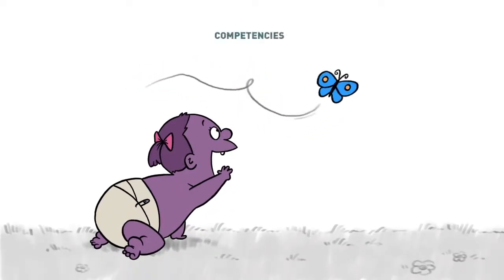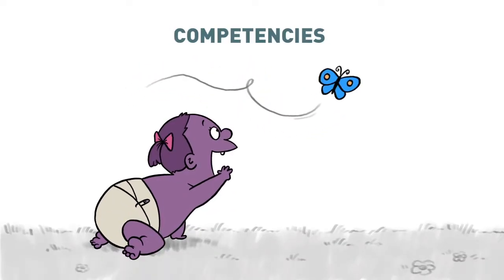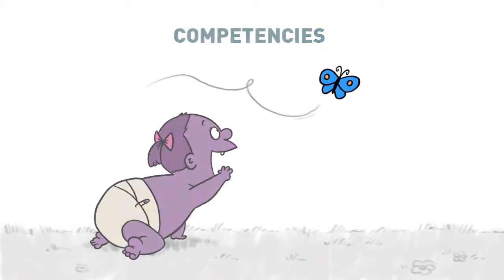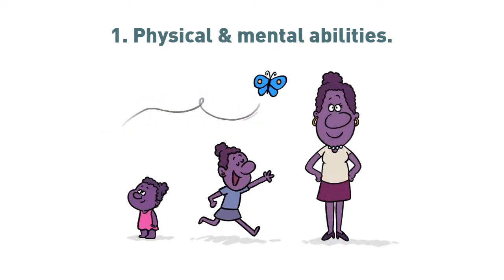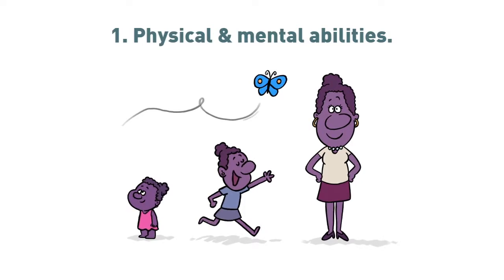At every point in life, everybody has competencies — things they can do. The things you and all people can do come from four sources. Number one: their physical and mental abilities, like to see, to hear, to breathe, to crawl, walk, run, to learn and interact.